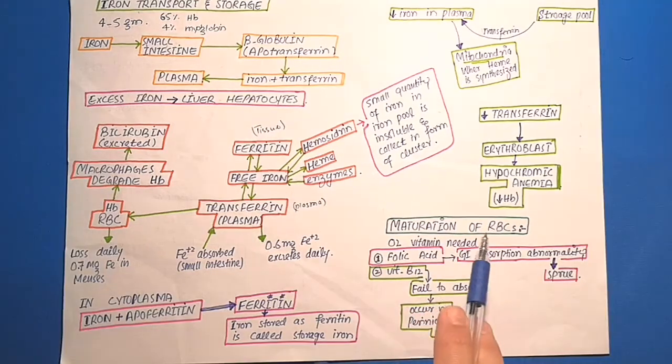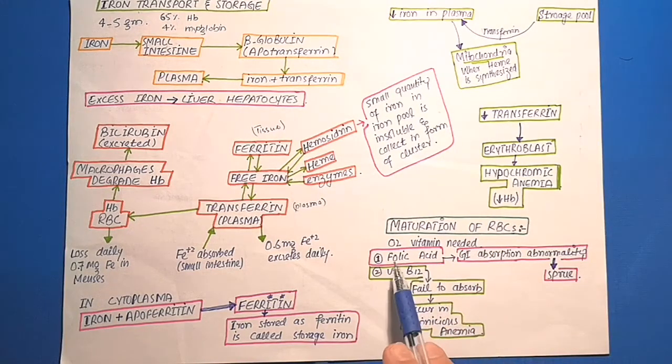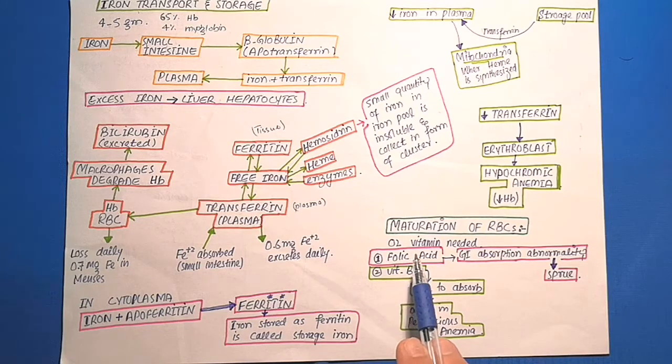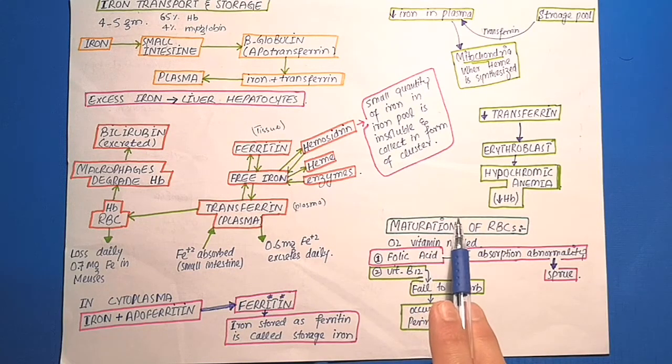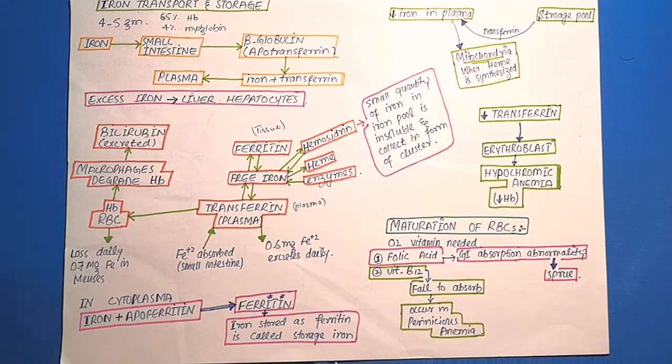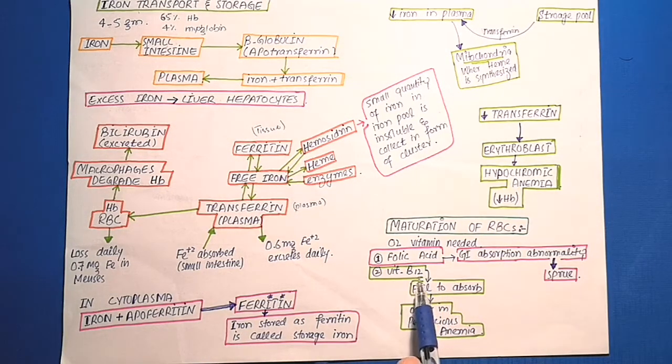Maturation of red blood cells. Vitamin B12 and folic acid are important for the final maturation of red blood cells. Both are essential for the synthesis of DNA. Lack of either causes abnormal or diminished DNA or failure of nuclear maturation and cell division. The deficiency of B12 and folic acid causes the maturation process of erythropoiesis to fail because erythroblastic cells of the bone marrow produce cells larger than normal red blood cells, which are called macrocytes.